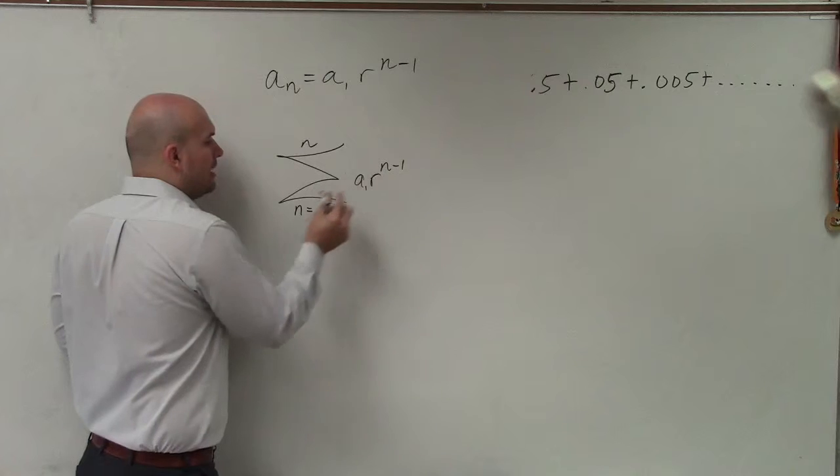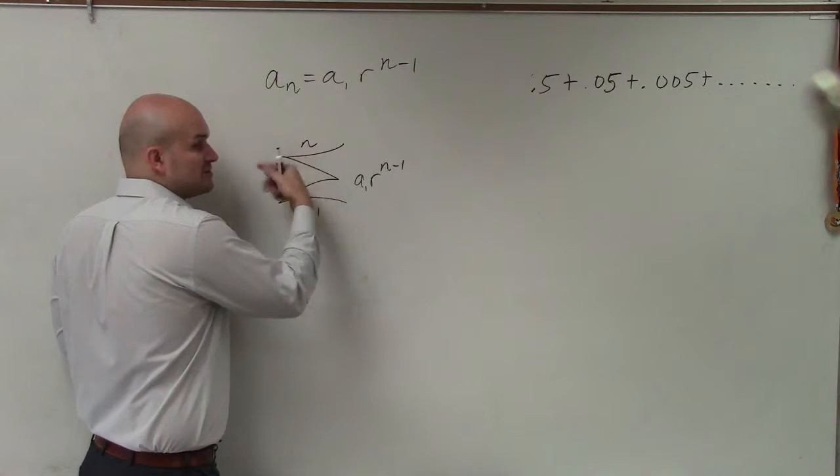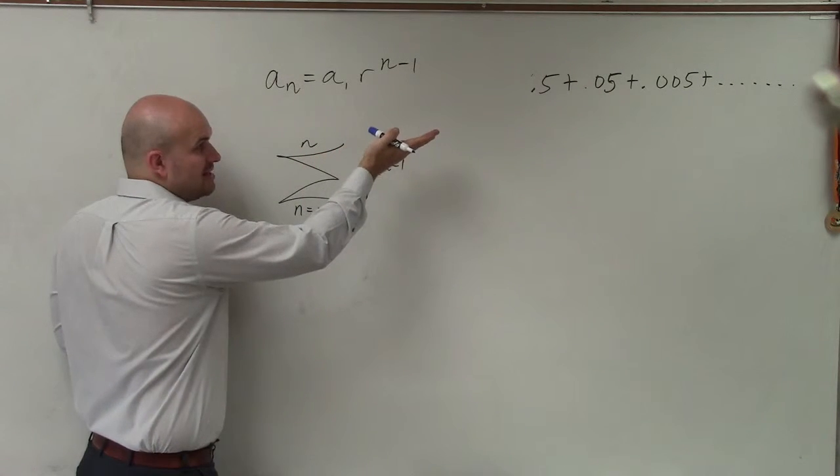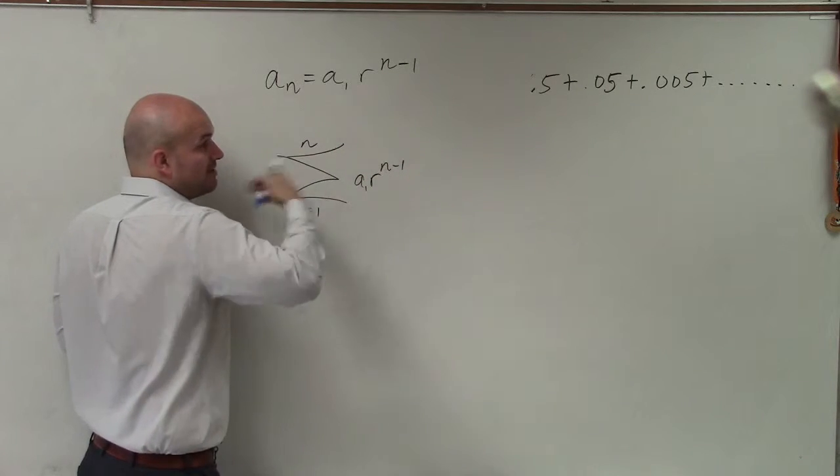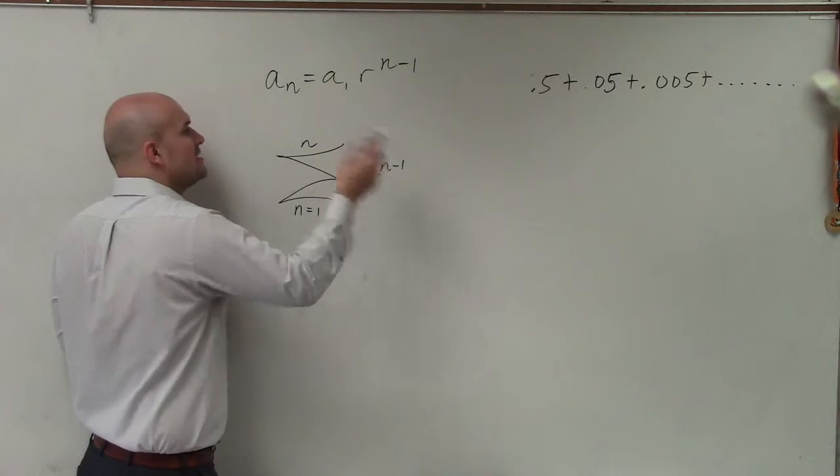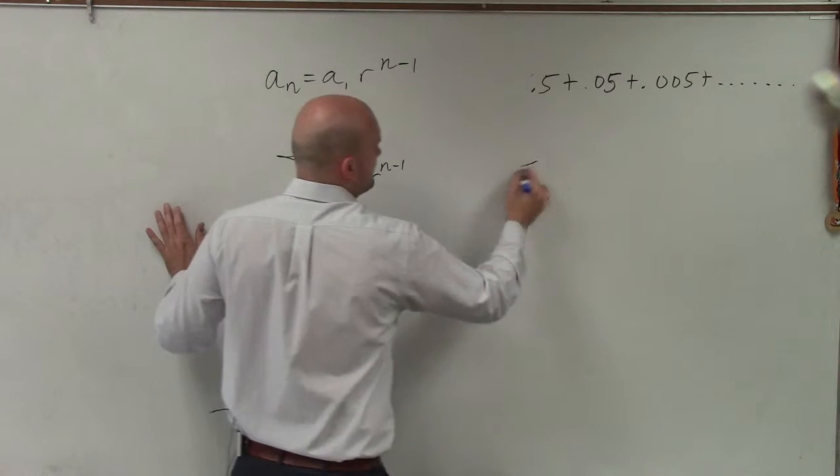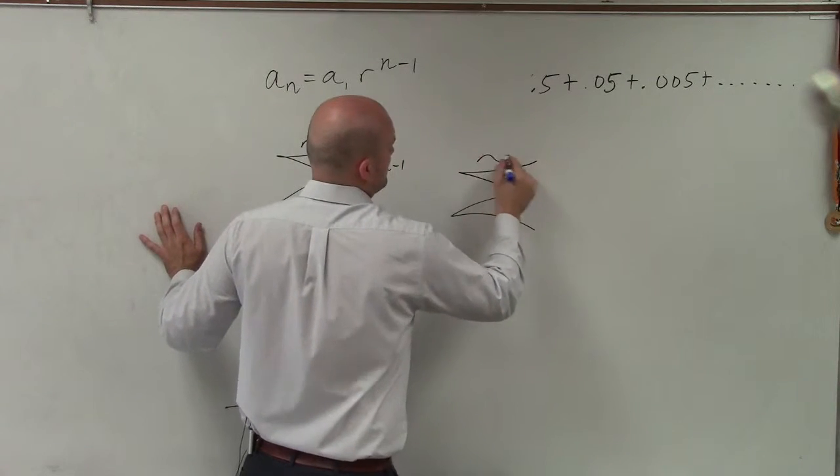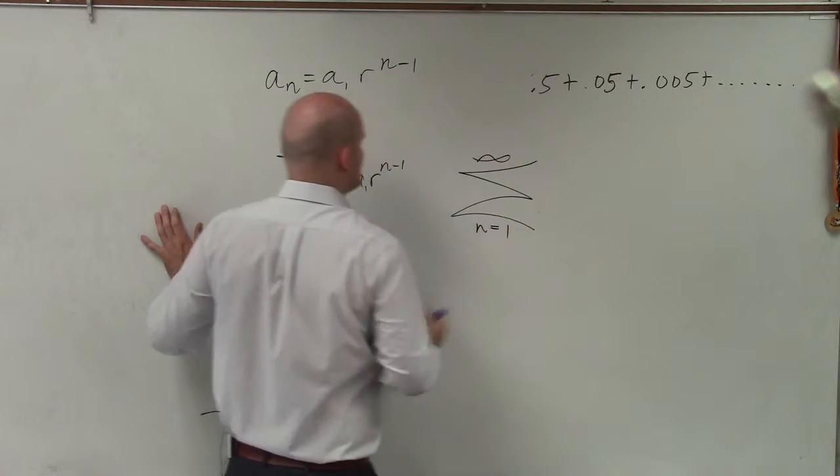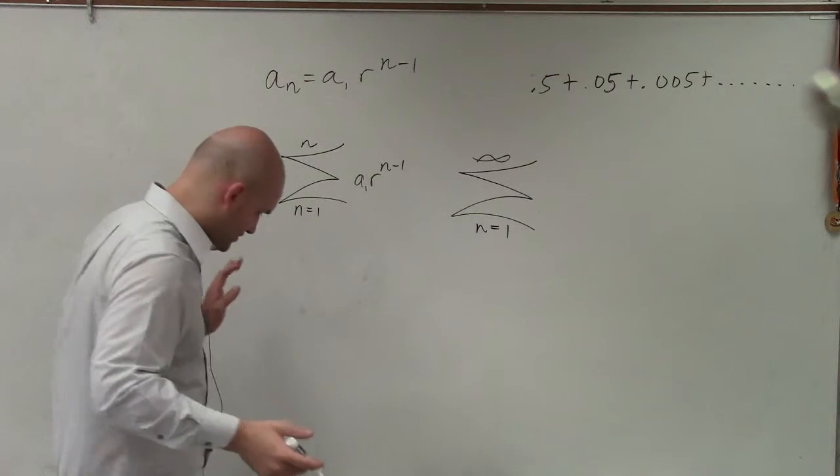general rule, where we're going to start, and then n, which is our upper limit. Well, since this series never stops, this value is going to be infinity. So we're going to start at 1 and go up to infinity.